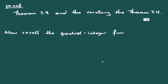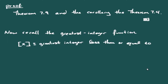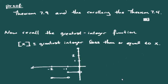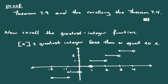To connect Riemann-Stieltjes integration with summations, recall the greatest integer function ⌊x⌋, the greatest integer less than or equal to x. This is our quintessential step function, and it's what we'll use to build the connection between Riemann-Stieltjes integrals and finite sums.